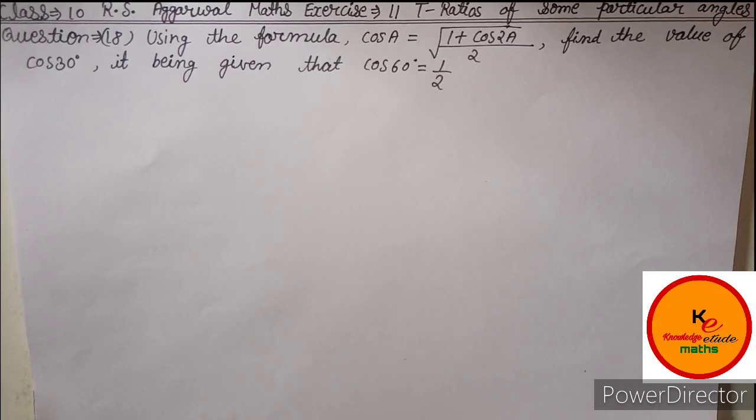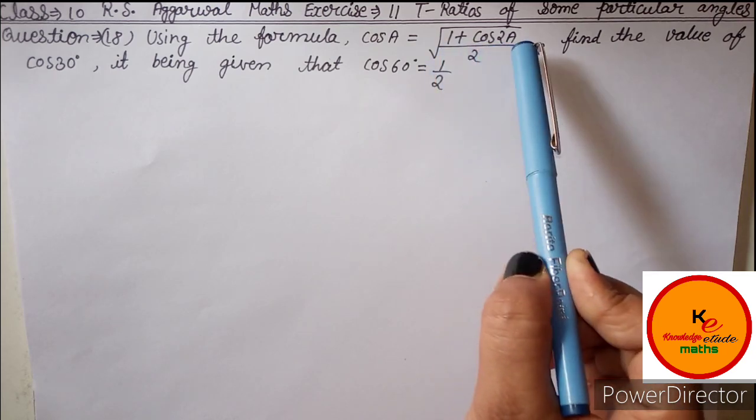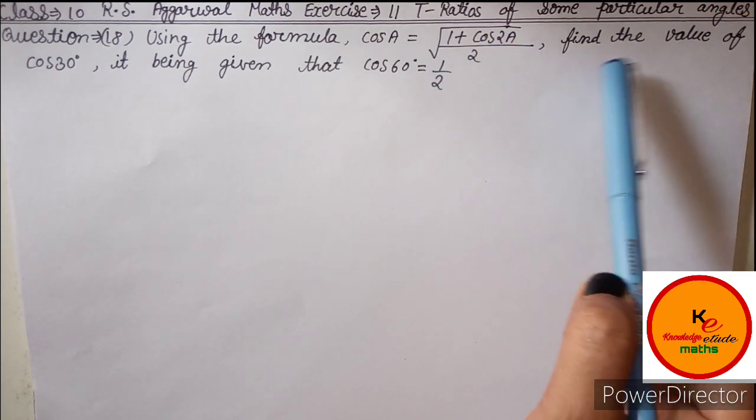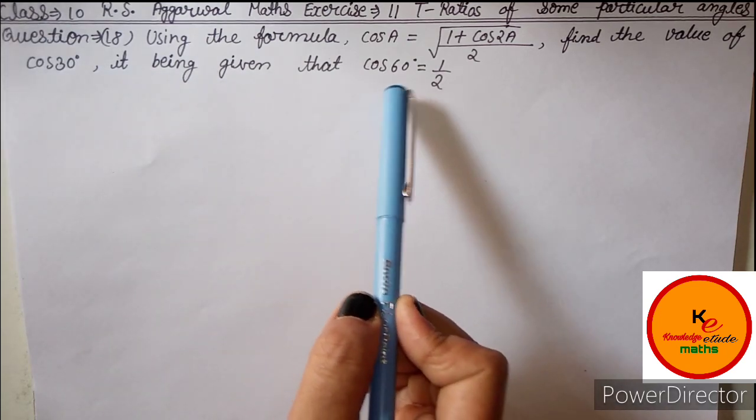Hello friends, I am Mili Yadav and welcome to my YouTube channel Knowledge Etude Maths. Class 10th R.S. Aggarwal Maths, Exercise 11, Question Number 18 is in front of you. Using the formula cos A is equal to under root of 1 plus cos 2A upon 2, find the value of cos 30 degree, it being given that cos 60 degree is equal to 1 by 2.